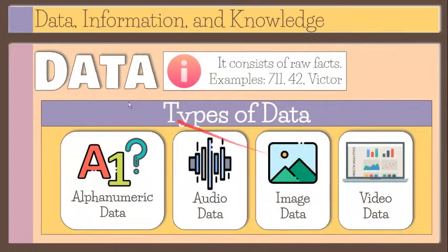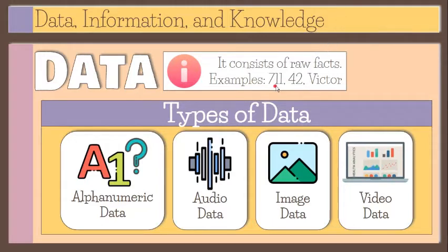Data is a term used to describe facts without a clear context. For example, the numbers 711 and 42 and the word Victor are all data. At the moment, there is no clear meaning that can be drawn from these data.